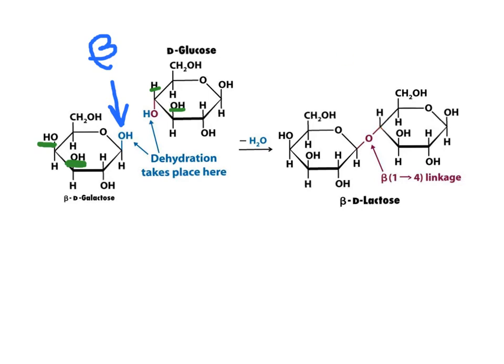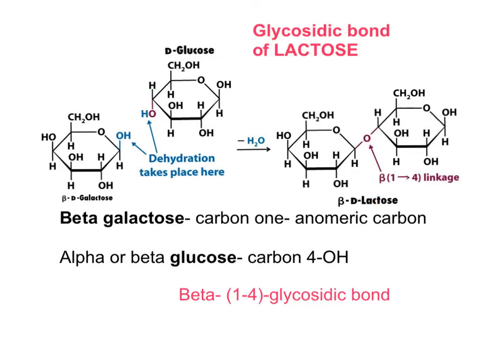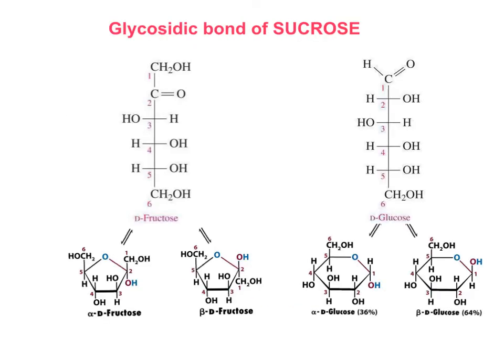Some people cannot digest lactose because they lack the enzyme lactase, which performs the hydrolysis of this bond. In summary, lactose is made of one beta-galactose unit and one alpha- or beta-glucose unit, involving the anomeric carbon of galactose and the hydroxyl group on carbon number four of glucose to make a beta-1,4 glycosidic bond.